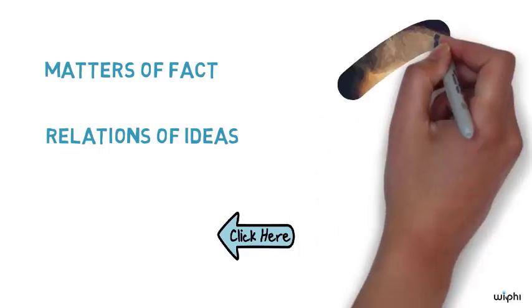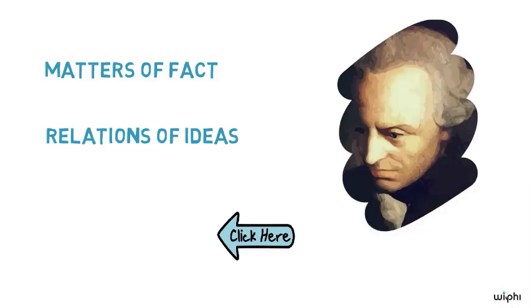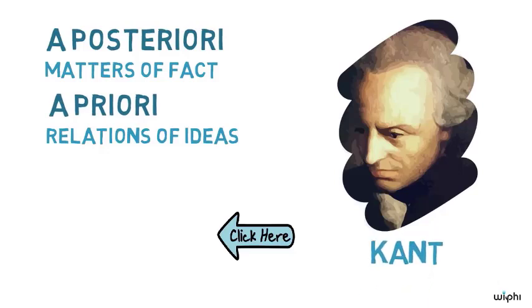This distinction that Hume is getting at between relations of ideas and matters of fact is closely related to what was later called the distinction between the a priori and the a posteriori by Immanuel Kant.